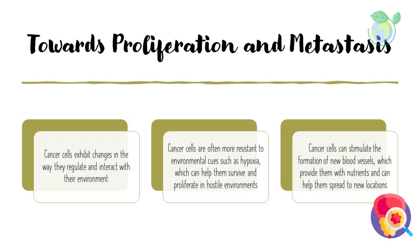Cancer cells exhibit changes in the way they regulate and interact with their environment. This can include changes in gene expression and the production of certain metabolites. In addition, cancer cells are often more resistant to environmental cues such as hypoxia, which can help them survive and proliferate in hostile environments.